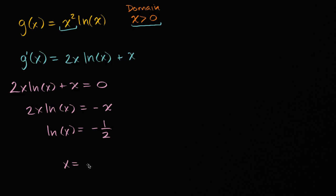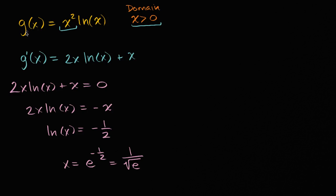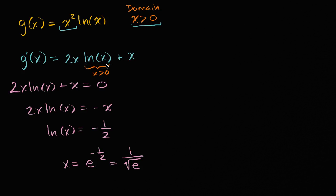So x equals e to the negative one-half, which is one over the square root of e. That's the only place where g prime equals zero. Are there any other points where g prime is undefined? Within the domain, the terms two x and x are defined for any x, and natural log of x is defined for all x greater than zero — which we've already restricted ourselves to. So within the domain, our derivative is always defined.